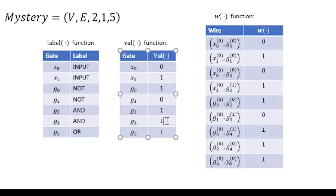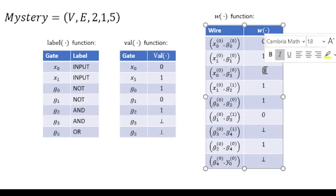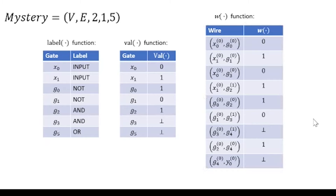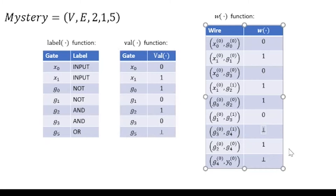Can we compute the value for g3? g3 has two inputs — one here and one here — and both of them are known. They are 0 and 0. g3 has the label AND, so we do 0 AND 0, which gives us 0. Now every edge starting with g3 is known.